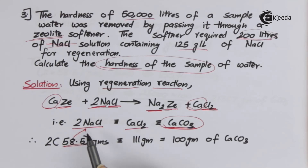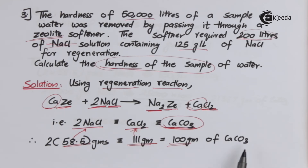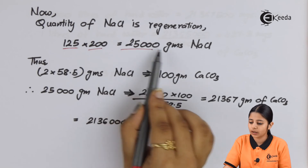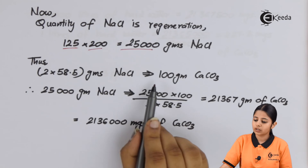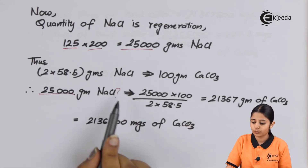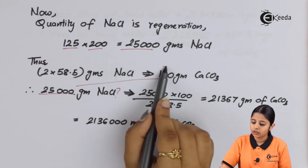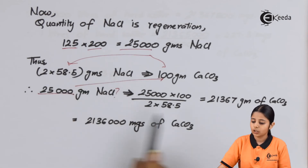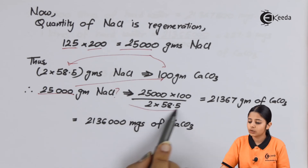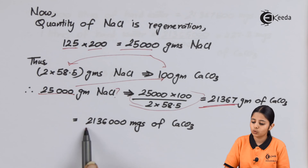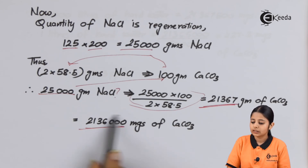The molecular weight of NaCl is 58.5, so 2 × 58.5 grams of NaCl corresponds to 111 grams of CaCl₂, which corresponds to 100 grams of CaCO₃. The quantity of NaCl for regeneration is 125 × 200 = 25,000 grams of NaCl. By cross multiplication: 25,000 × 100 ÷ (2 × 58.5) = 25,000 × 100 ÷ 117 = 21,367 grams of CaCO₃, which converts to 21,367,000 milligrams of CaCO₃. This is the hardness of the water.